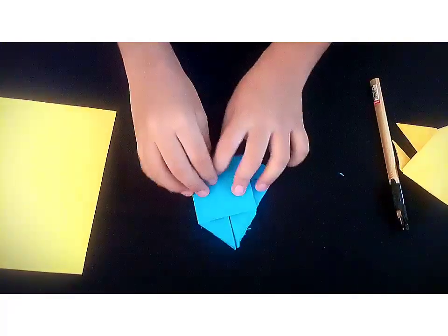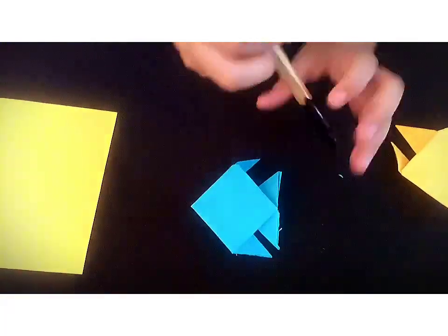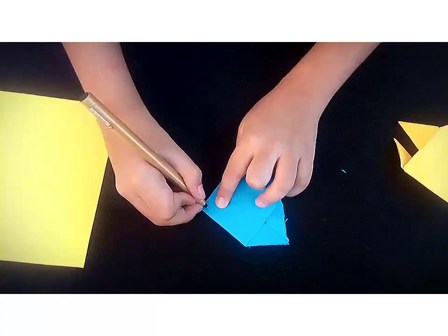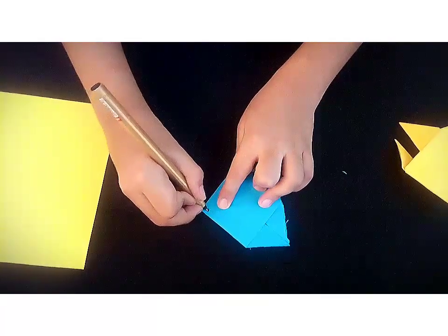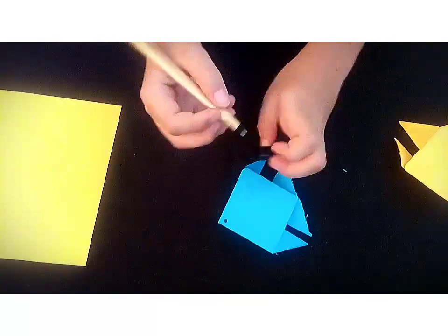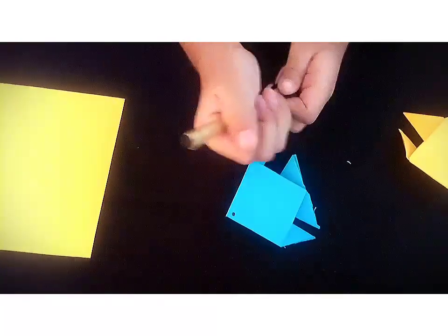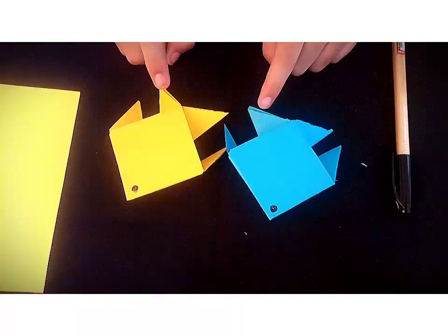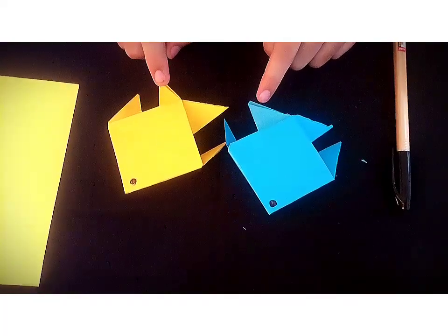Okay, so then you will turn it other side and you will just make a small dot as the eyes. Ta-da! The fish is ready to swim.